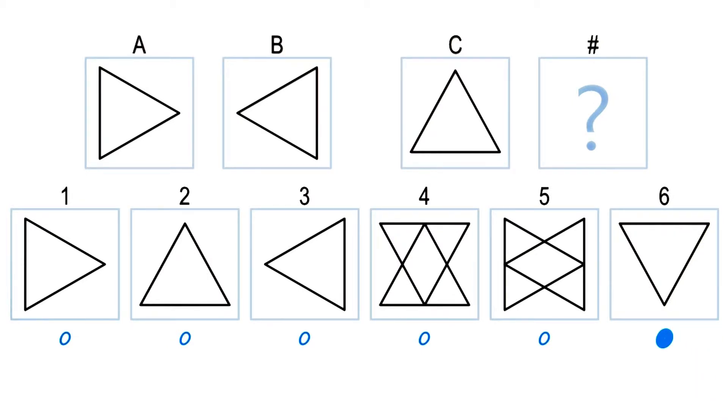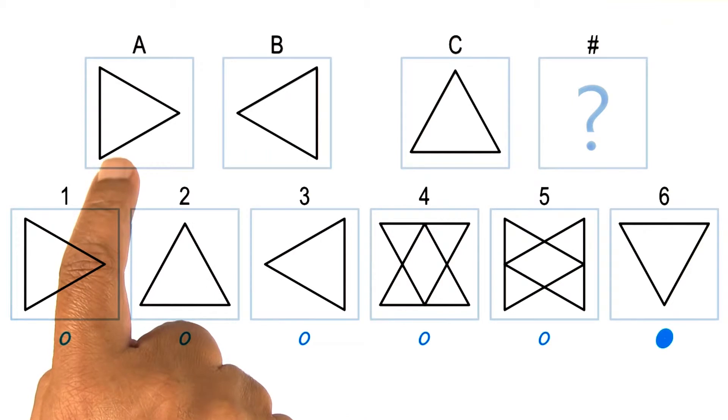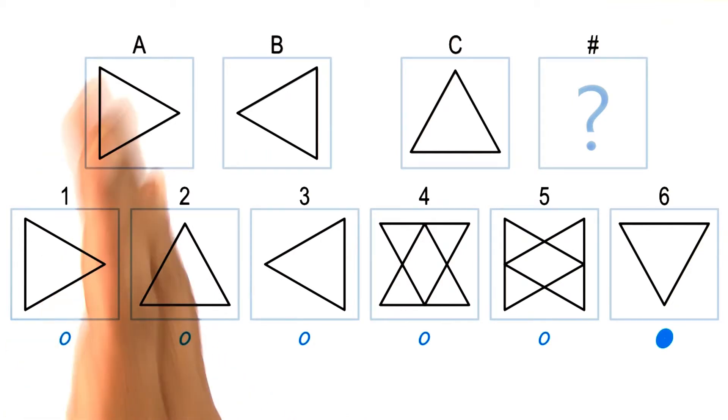But notice there is another possible answer here. Two is also a possible answer. Why is two a possible answer? Because one can imagine that B is really a reflection of A across a vertical axis.